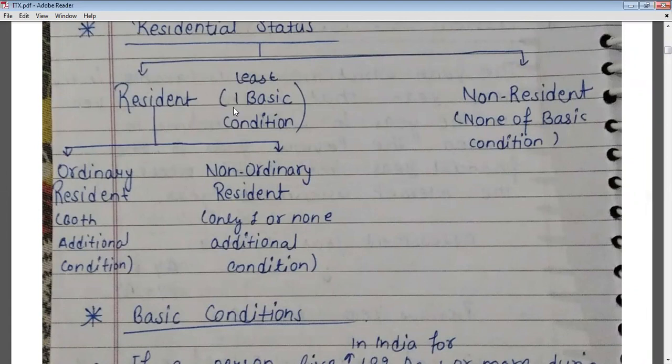If a person does not fulfill any basic condition — that means none of the basic conditions — they will be considered a non-resident. If a person is determined to be a resident, then we further have to check whether they are an ordinary resident or not ordinary resident.